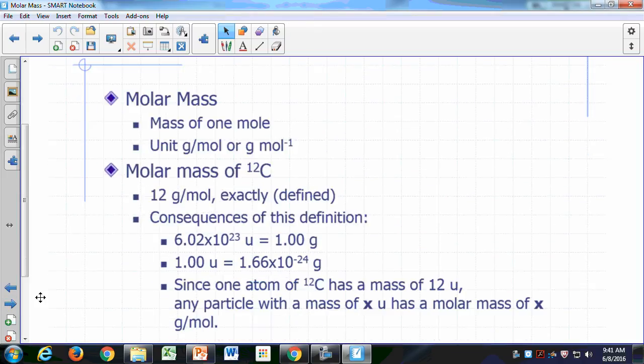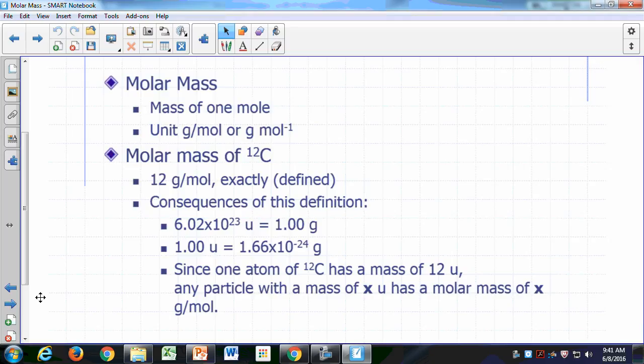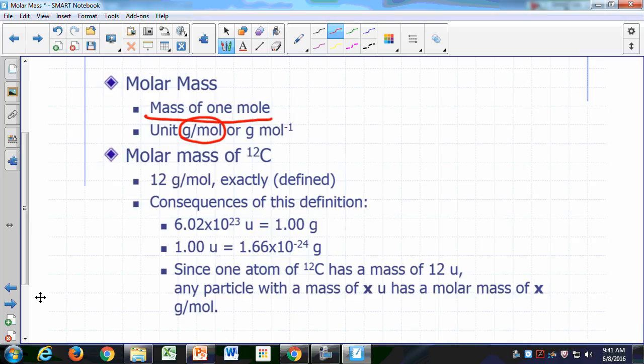So what's a molar mass? Molar mass is simply the mass per mole. So if you have a mole of something, its molar mass is the mass per mole of that thing. So the unit is grams per mole, g slash mol, or g times reciprocal moles. You read that as grams per mole.